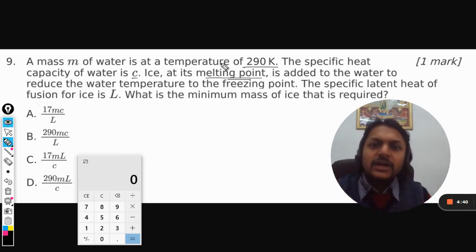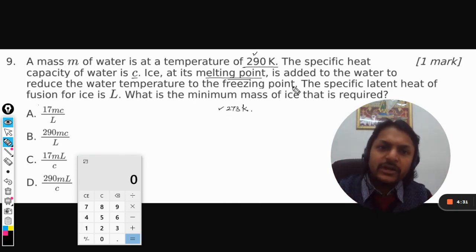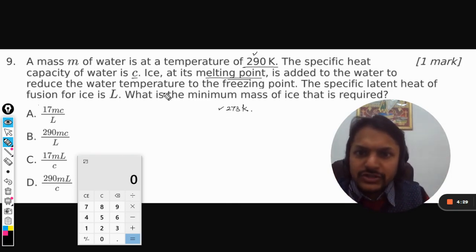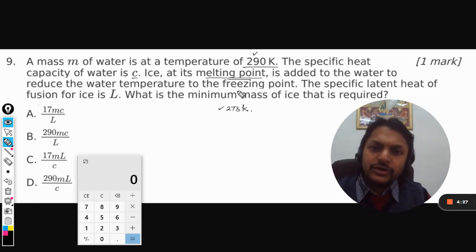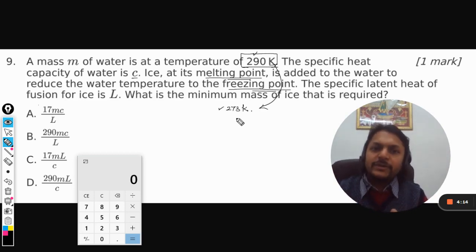So there is ice at 273 Kelvin and water at 290 Kelvin. Ice is added to the water to reduce the temperature of the water to the freezing point. This means the liquid water has to lose all of its heat, reducing itself from 290 Kelvin to 273 Kelvin. The specific latent heat of fusion is L.